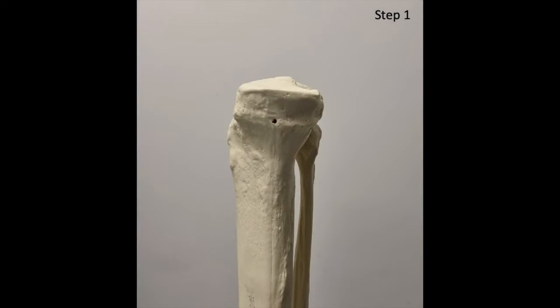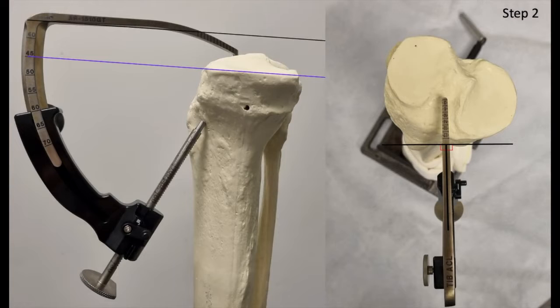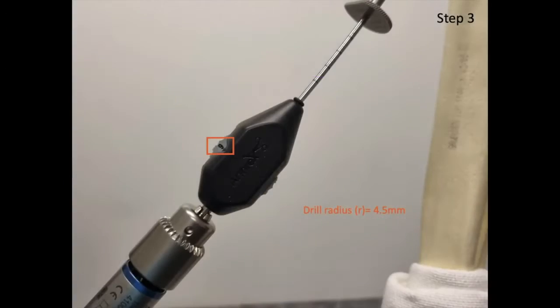The first step is to calculate the posterior tibial slope. The second step is to orient the intraarticular arm of the tibial drill guide parallel with the tibial plateau in the sagittal plane and perpendicular with the anterior medial cortex of the tibia in the axial plane. The third step is to determine the radius of the tibial tunnel by dividing the diameter of the planned tibial tunnel by 2.